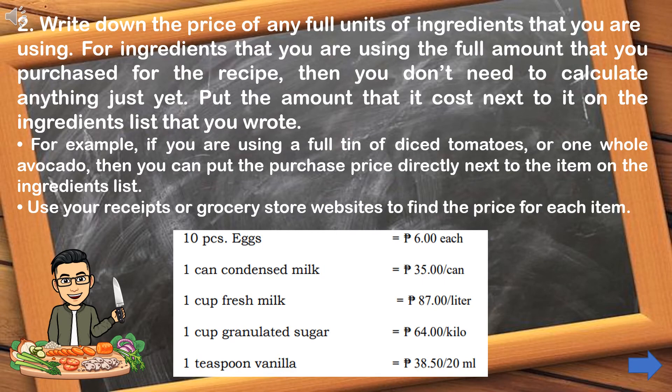Step number 2: Write down the price of any full units of ingredients that you are using. For ingredients where you are using the full amount that you purchased for the recipe, record the full purchase price.